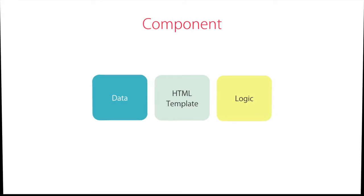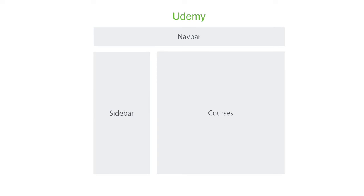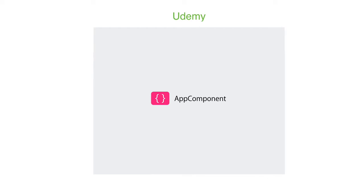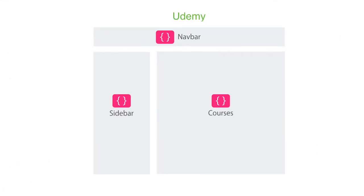Let's look at a real-world example. Imagine we're going to build a website like Udemy. On this page, we have a navigation bar, a sidebar, and an area to display the list of courses. Now, we can think of all this as one view or one component, or we can break this view into smaller, more maintainable, and potentially reusable components, like a navbar component, sidebar component, and courses component.